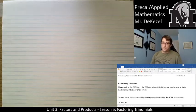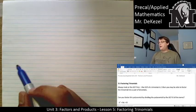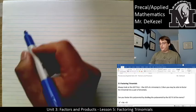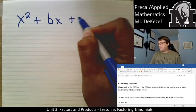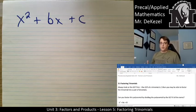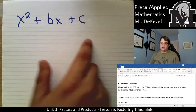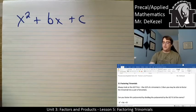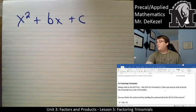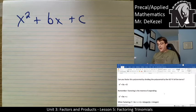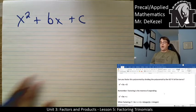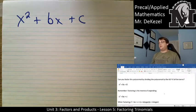So the first thing you always do whenever you have a trinomial — x squared plus bx plus c — you're going to check to see if there is a common factor between them that you can factor out. If the greatest common factor is 1, then you can move on to the next step. There will be times when we want to pull something out of the brackets before we can factor the entire thing.